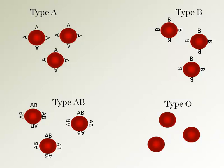Not only does the red blood cell surface have a marker, but the plasma surrounding those cells contains a specific antibody to attack any marker that is foreign to that person. There are two types of antibodies: antibody A or anti-A, and antibody B or anti-B. Anti-A antibodies will bind to any A marker on a red blood cell to cause clumping. Anti-B antibodies will bind to B markers on the surface of a red blood cell to cause clumping.